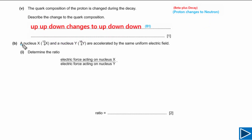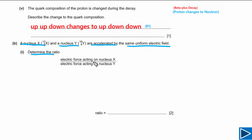For part B, it is given that nucleus X has proton number 6 and mass number 12, and nucleus Y has mass number 16 and proton number 8. They are accelerated by the same uniform electric field. We need to determine the ratio of the electric force acting on nucleus X to the electric force acting on nucleus Y.